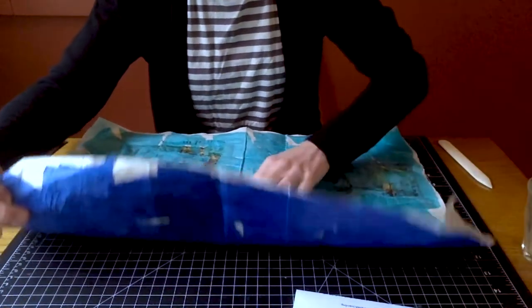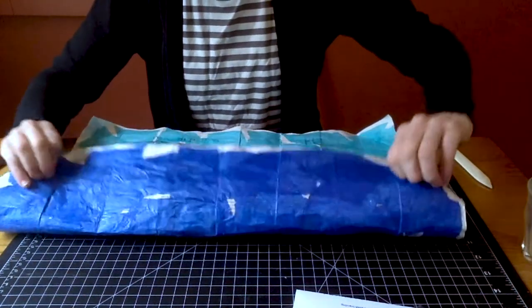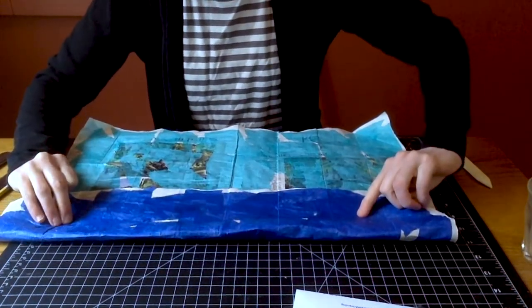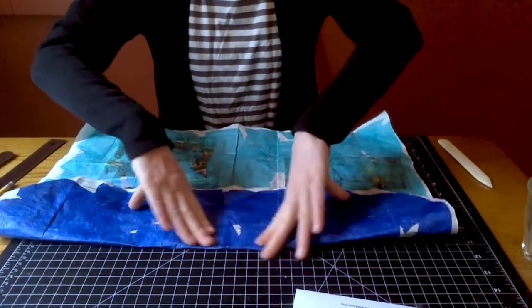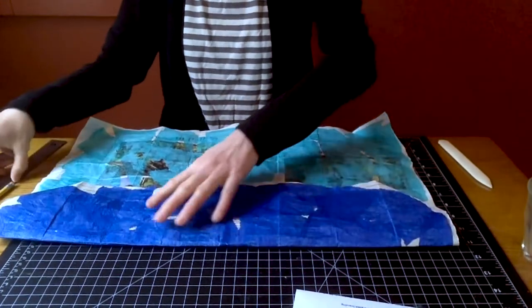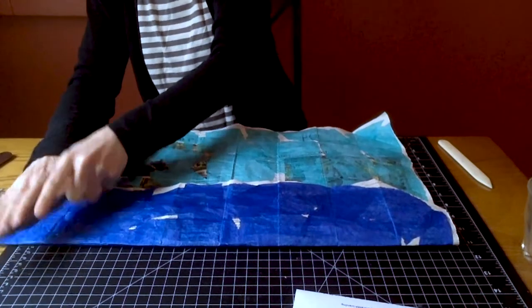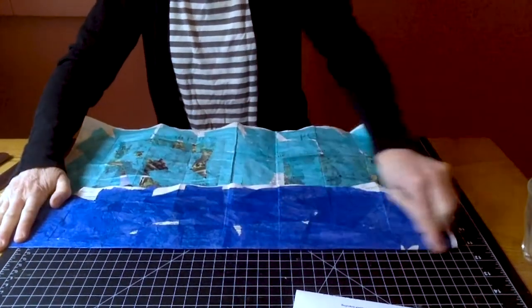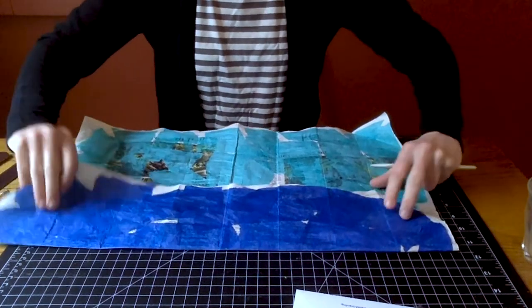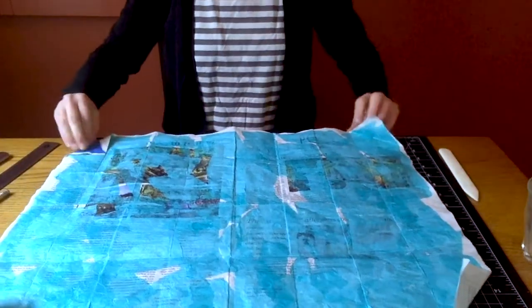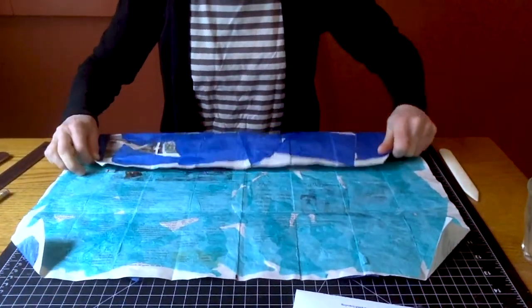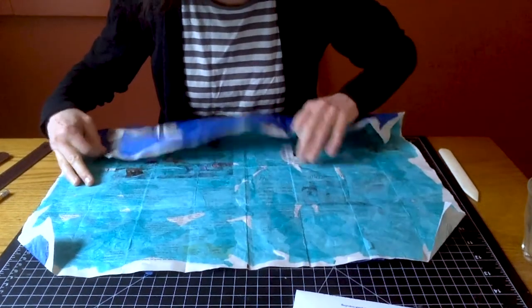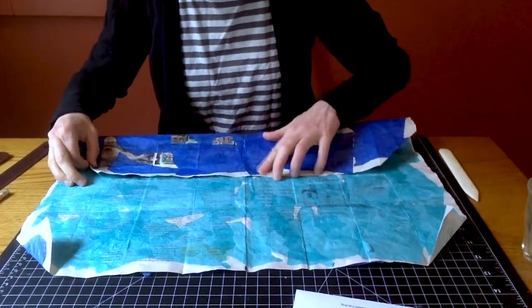We're going to take our top edge and fold that down to the bottom mark. And flip that back up. Take our bottom edge and fold that up to our top pencil mark.